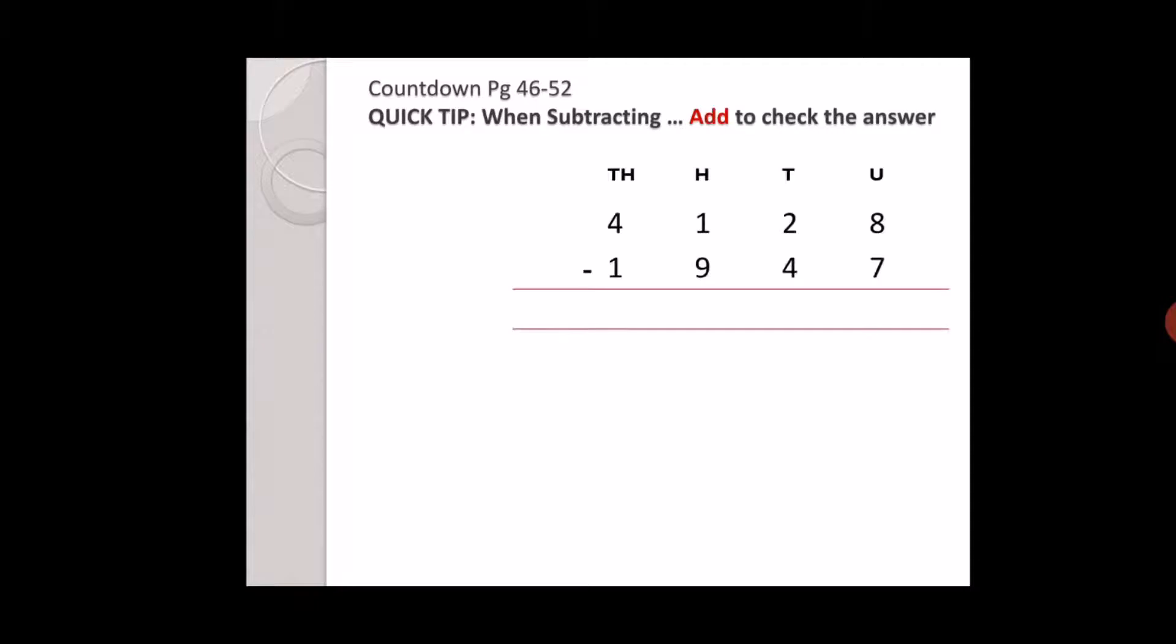The question is four thousand one hundred twenty eight minus one thousand nine hundred forty seven. Eight minus seven is one. Two minus four cannot be done, so we borrow one from hundreds, so this becomes twelve.